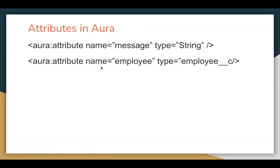Here is an example of how we declare variables in Aura — those are known as attributes. You need to write aura:attribute, then define the name of the attribute and its type. These statements are written in the markup file. I'm assuming you've already gone through Aura topics so you know how these features were implemented there.